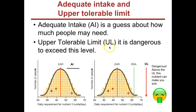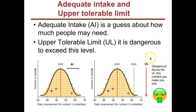An upper tolerable limit is an important number for you to know about nutrients. Unfortunately, many nutrients, many vitamins, and many minerals can be ingested at levels that become dangerous. This is called the upper tolerable limit, or the UL. Consuming nutrients above the upper tolerable limit can be dangerous and can make you sick, so it's very important to be aware of upper limits for nutrients.